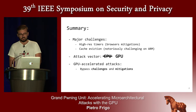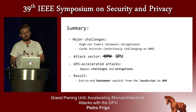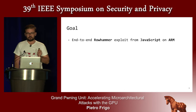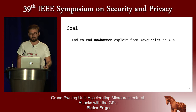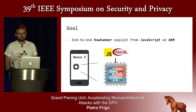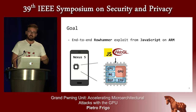The result is that we can finally implement an end-to-end Rowhammer exploit from JavaScript, and we can do this even on the more challenging ARM platforms. The threat model is an Android smartphone where an attacker controls a website and can run their own code, including WebGL code on the GPU.